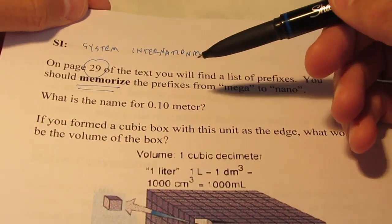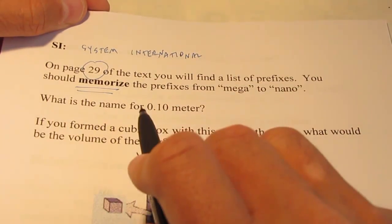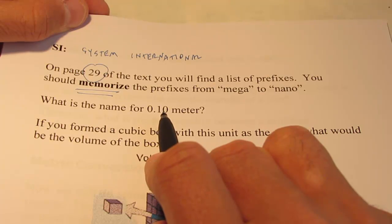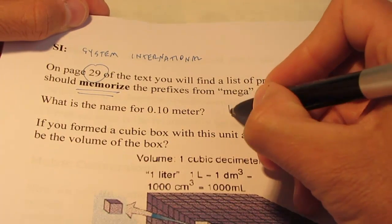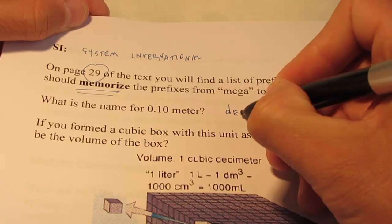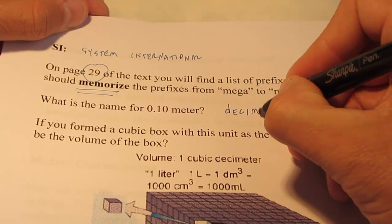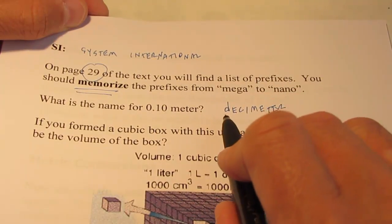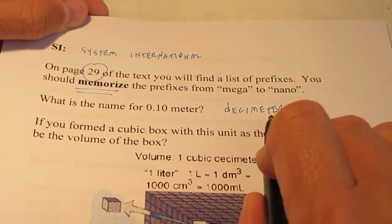If you looked at those prefixes and found the name for a tenth of a meter, you would see that the prefix for a tenth was deci. So a tenth of a meter then would be a decimeter, which literally means a tenth of a meter.